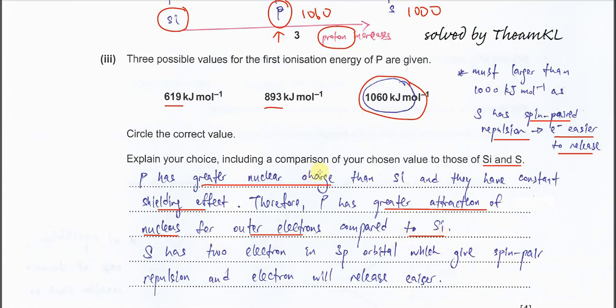Because of the greater charge, it has greater attraction. It's better to mention the constant shielding effect. This is the full comparison between phosphorus and silicon in first IE.